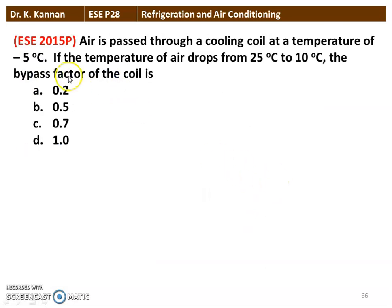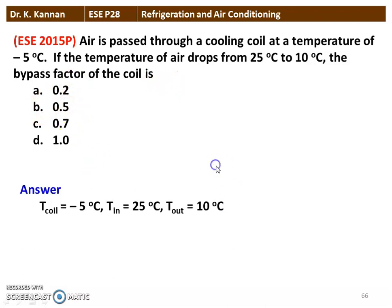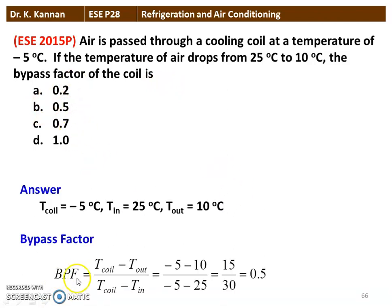The next question from the 2015 question paper: Air is passed through a cooling coil at a temperature of −5°C. The air temperature drops from 25°C to 10°C. The bypass factor of the coil is calculated as: BF = (coil temperature − outlet air temperature) / (coil temperature − inlet air temperature) = (−5 − 10) / (−5 − 25) = 15/30 = 0.5.